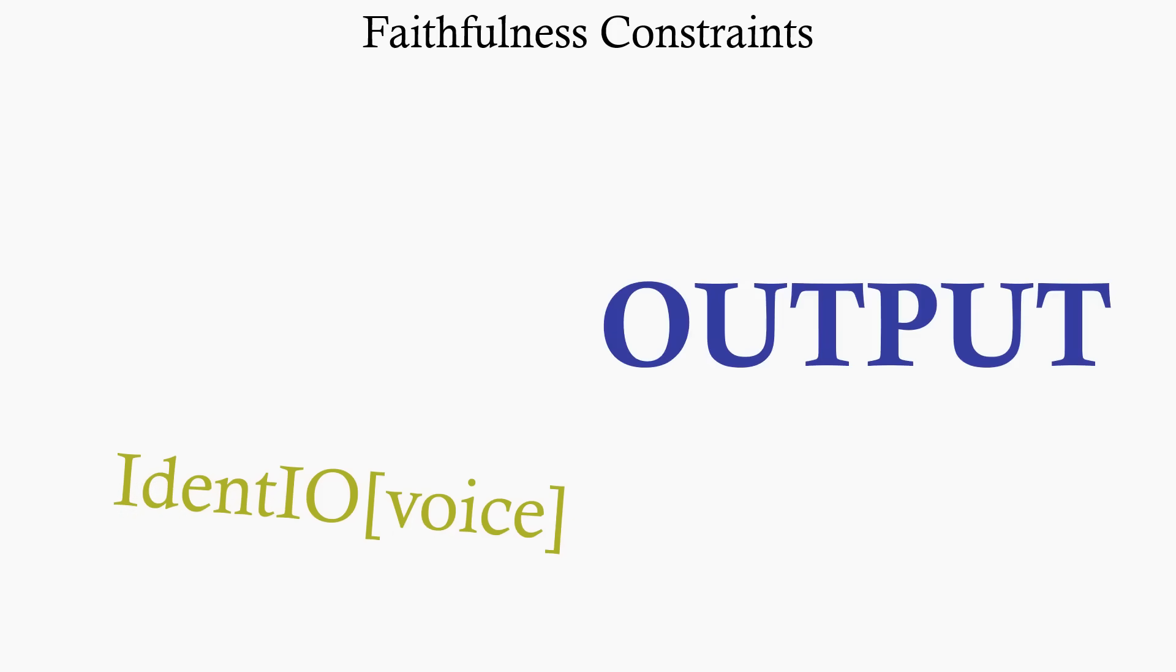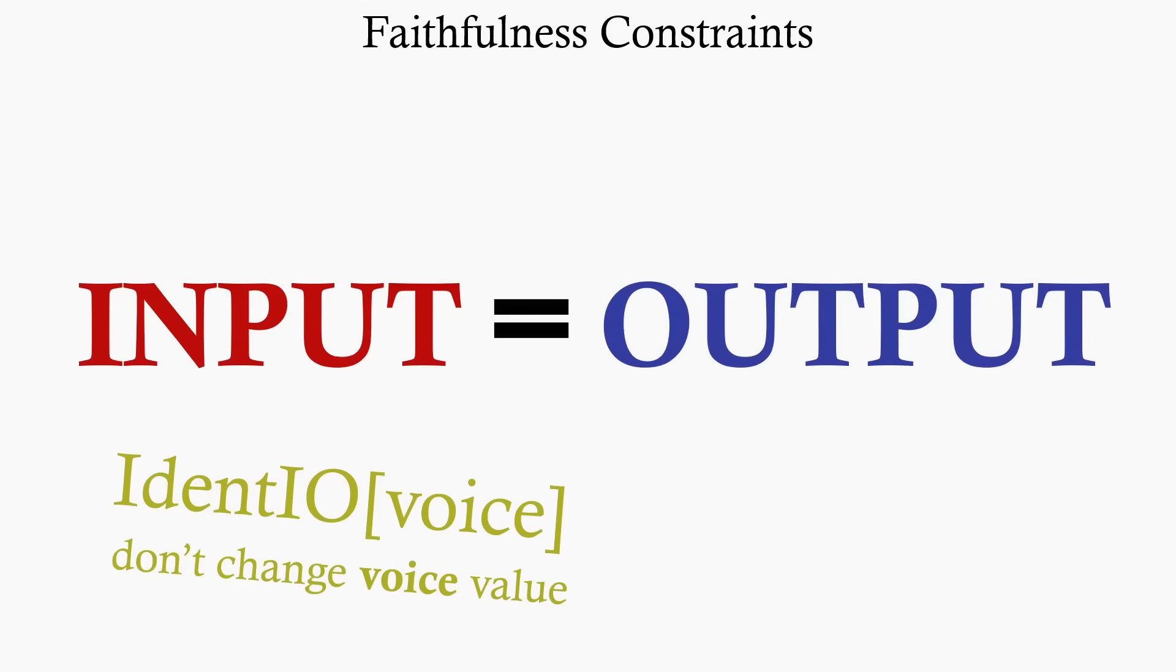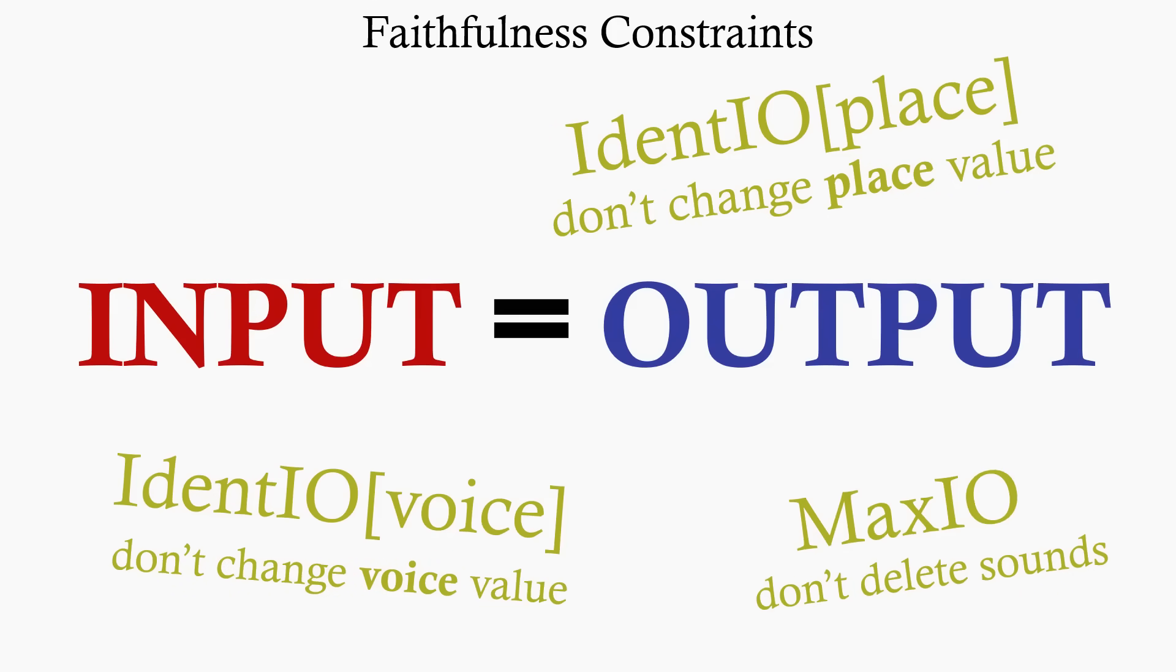These are in contradiction with faithfulness constraints, like the identio voice that we had earlier. They describe in different ways how the output should stay the same as the input. We shouldn't change the voicing of sounds, we shouldn't change the position of sounds, that's identio place. We shouldn't get rid of sounds we don't like, that's maxio.